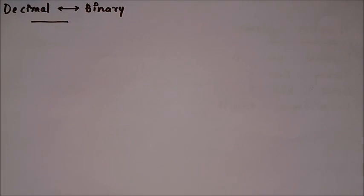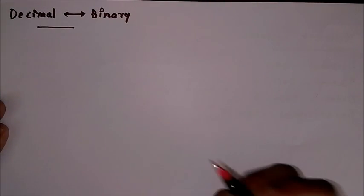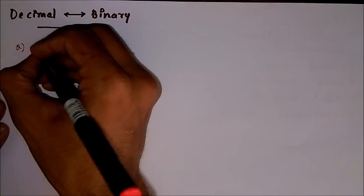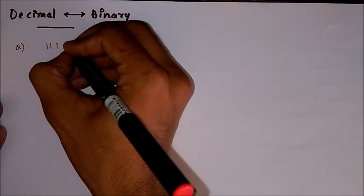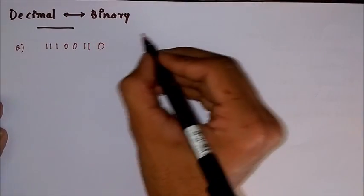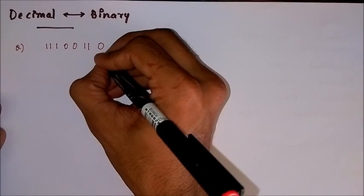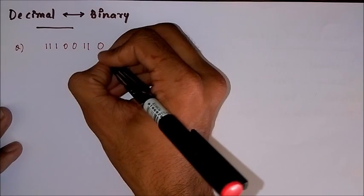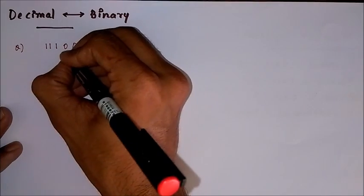First of all, let's look at the decimal and binary interconversions — from this you can understand all the other conversions. I am considering a binary number which is to be converted into the decimal number system. We name the places starting from the rightmost digit as position 0, then position 1, and so on.